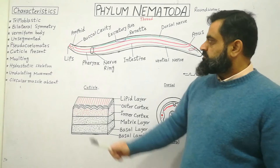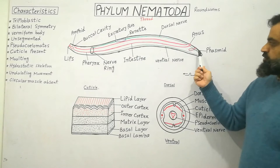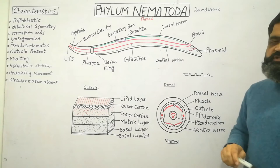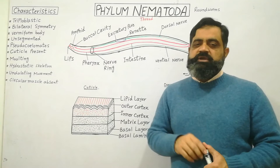On the posterior side there is also a sensory chemoreceptor known as the phasmid, located just near the anus. It is also sensory in function and can detect different types of chemical environments.